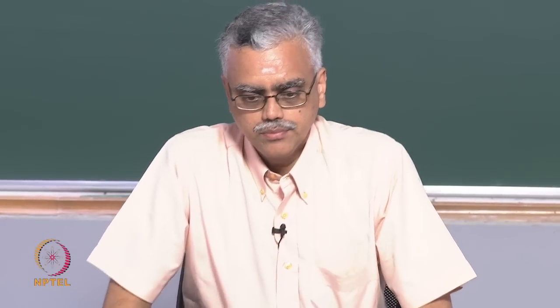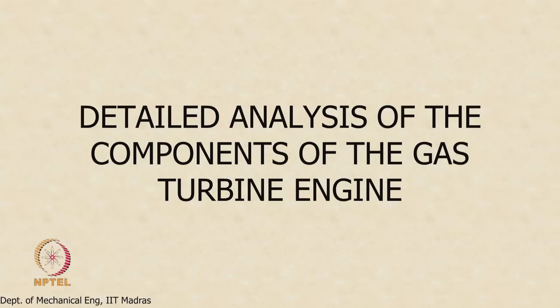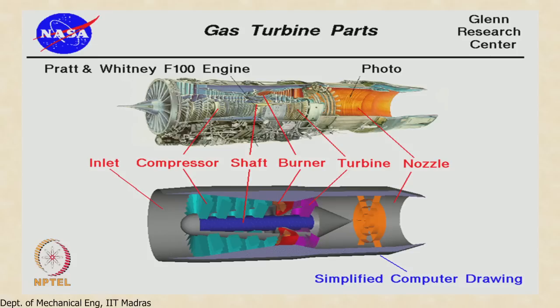We begin today's lecture by starting to look at a detailed view of each one of the components of a gas turbine engine. We looked at the need for a gas turbine engine in the previous class, so now we will start a detailed look at each one of the components of a turbojet engine. The major components are an intake, compressor, combustor (also called the burner), turbine, and a nozzle.